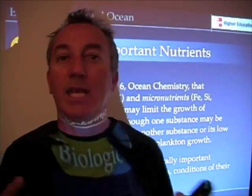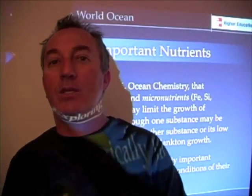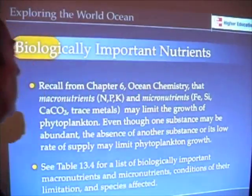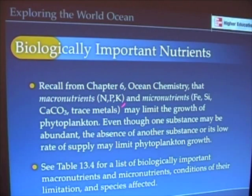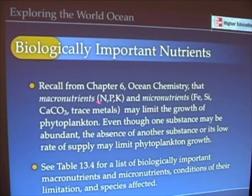Roses have one N to P to K ratio. Citrus trees have a different one. Tomatoes, corn — all these different kinds of things need different concentrations or different ratios of nitrogen, phosphorus, and potassium. But all plants, including phytoplankton, need these what are called macronutrients. They need a source of nitrogen, a source of phosphorus, and a source of potassium.